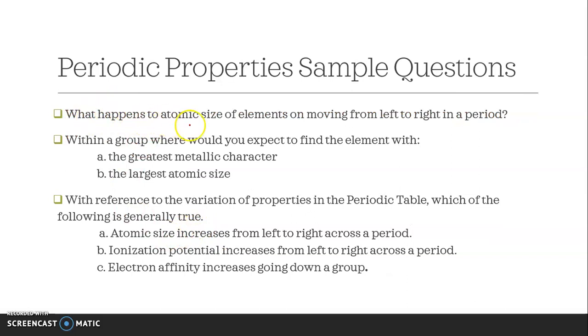Some more sample questions: what happens to atomic size of elements on moving from left to right in a period? Within a group, where will you expect to find the element with greatest metallic character and largest atomic size? With reference to variation of properties in periodic table, which statements are true? Like atomic size increases from left to right across a period - true or false. If you learn the trends properly, you can answer all these questions.